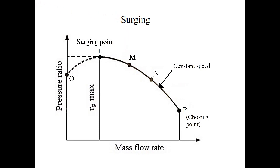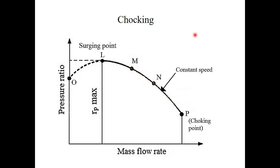Choking point occurs at point P on the pressure ratio versus mass flow rate graph. Choking occurs when the mass flow rate is too large and there is a sudden decrease in pressure ratio; during choking the pressure ratio becomes unity — meaning there is no compression at all. At point P the speed of the air reaches sonic velocity, and compressor performance decreases abruptly. After choking point P the graph becomes vertical, indicating the pressure ratio reduces to unity.